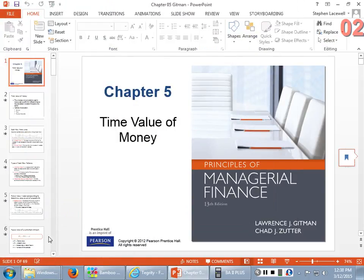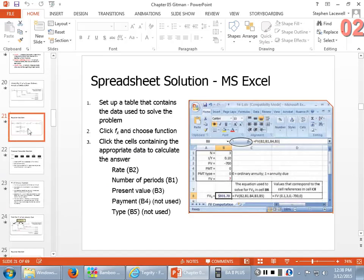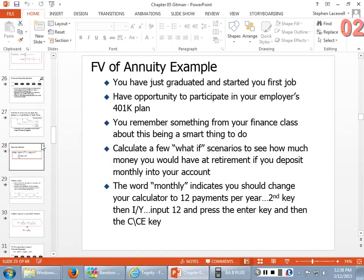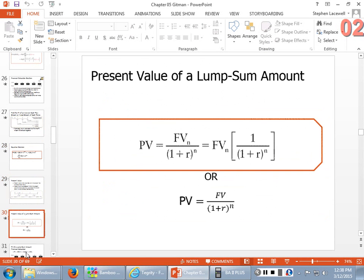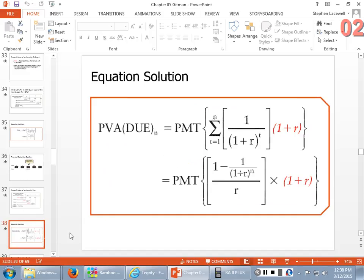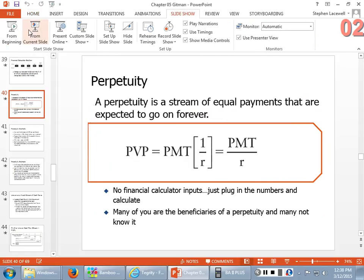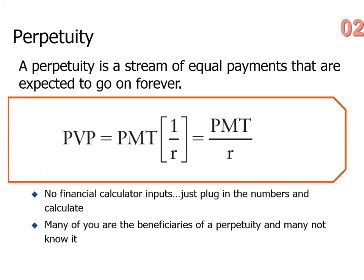We left off, I believe, in Chapter 5. We had just talked about present value — we went through a present value calculation, and we talked about the present value of a lump sum. We're talking about time value of money. With present value, what we're doing is taking a future sum of cash and bringing it back to today's dollars at a certain discount rate.